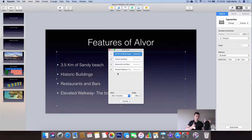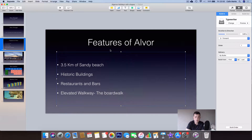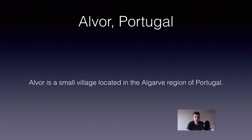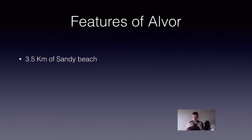We can set the delay to maybe one and a half seconds. I'll preview it — the rest of the bullet points are still set to 'On Click' so I'll have to click those manually. You can see after 1.5 seconds the first bullet point comes up. In full screen mode: press enter for slide two, press enter, and then after 1.5 seconds it starts appearing.